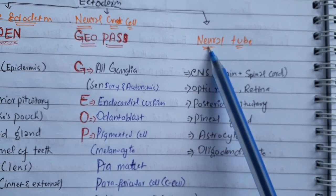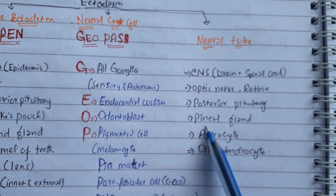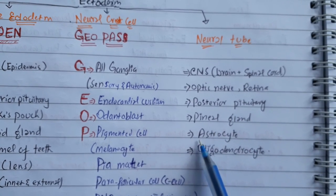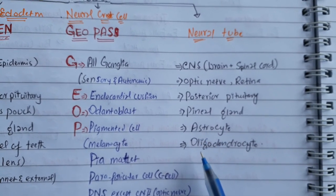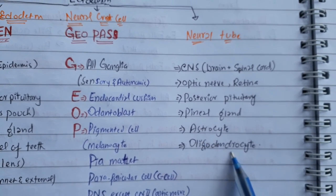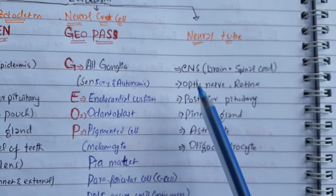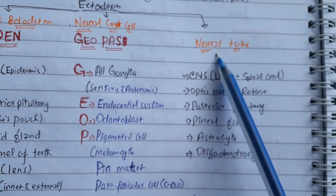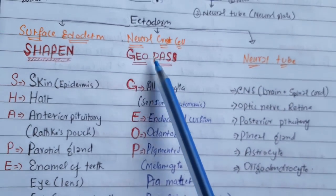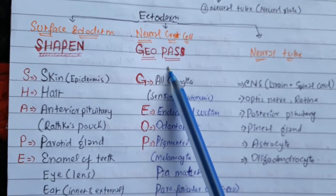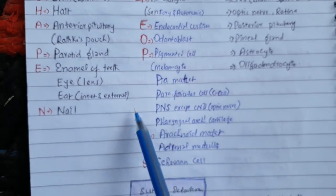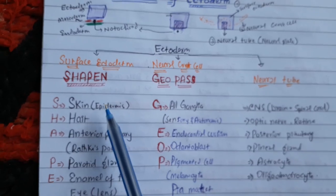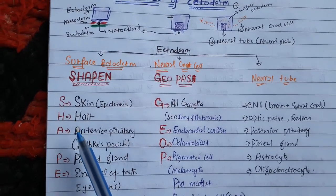Pineal gland, which is present in the brain, astrocytes — also present in the brain — oligodendrocytes, which myelinate neurons in the central nervous system: these are all derivatives of the neural tube. For neural crest derivatives, watch my other video. And for surface ectoderm, just remember SHAPE IN.